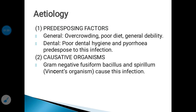Looking at the etiological factors, the causative organisms responsible for development of Vincent's angina are gram-negative fusiform bacillus and spirillum, called Vincent's organism. Certain predisposing factors include overcrowding, poor diet, and general debility. Dental causes like poor dental hygiene and pyorrhea also predispose to this infection.